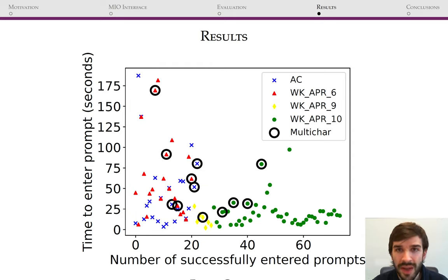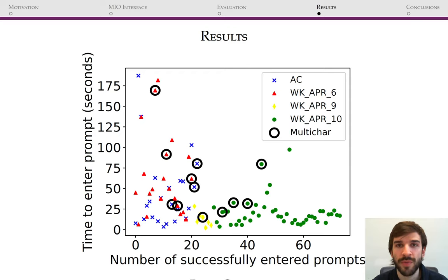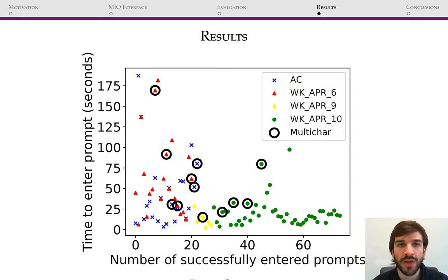Participant WK, who was more proficient with technology before the experiment, chose to repeat it a second time. She scored MIO at 57.5 points following the first experiment and 75 points following the second. She explained, 'I feel very confident because I know where everything is,' and said she would like to use the keypad for typing messages when she does not have her braille keyboard with her.